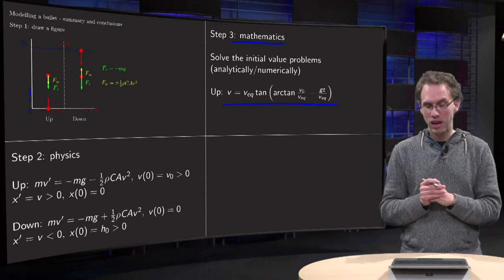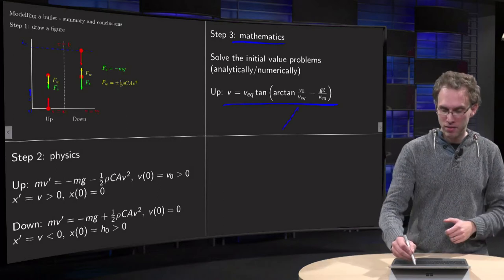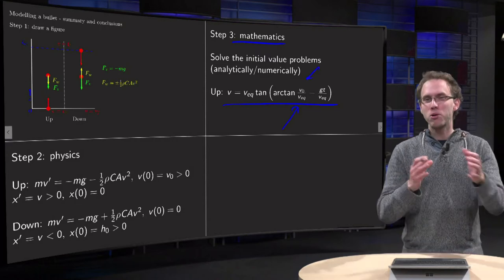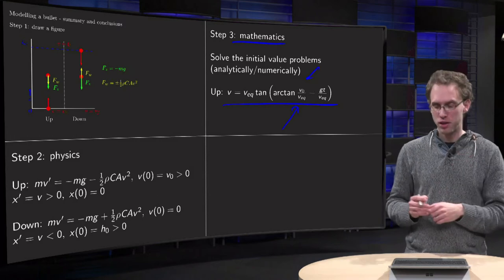We had an expression for that in terms of parameters which meant something, like the v equilibrium, like the v zero. All your constants in your problem should mean something and have some physical interpretation in the end.